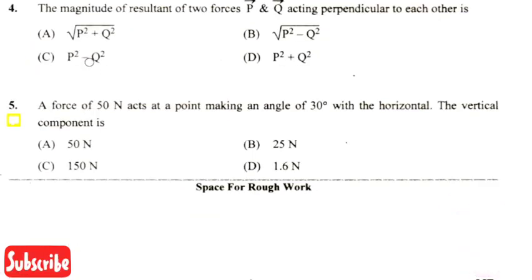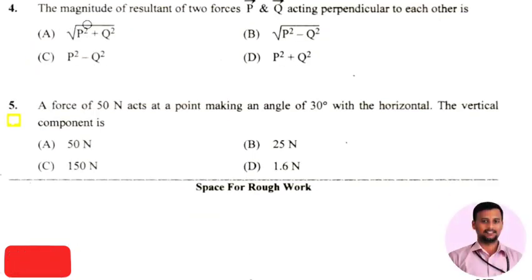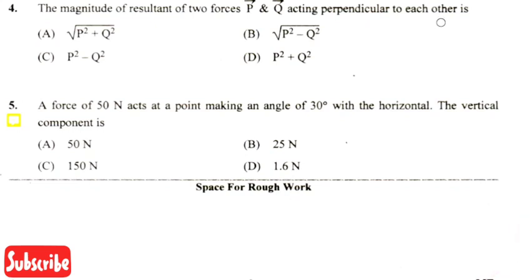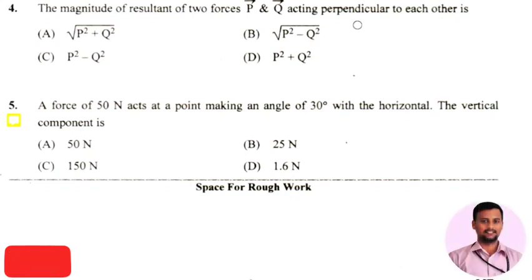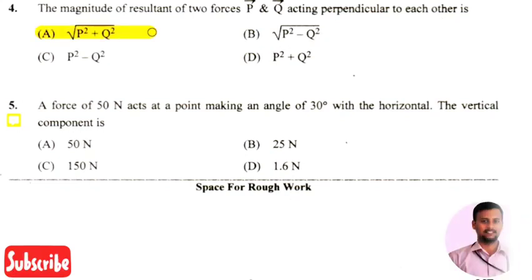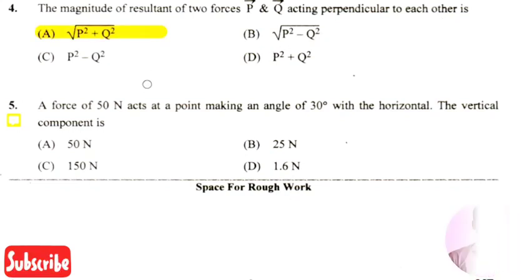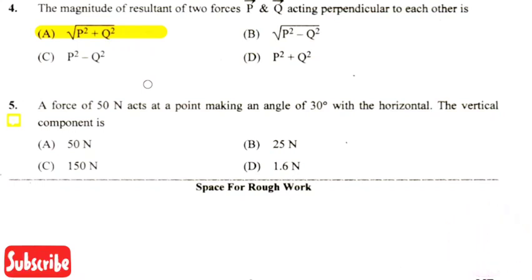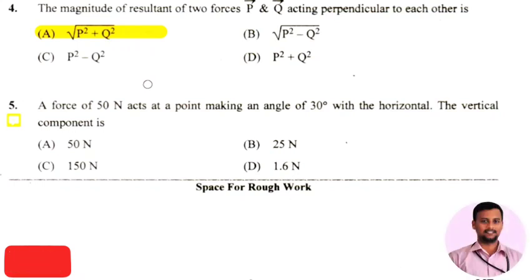The next question asks about the magnitude of the resultant of two forces P and Q acting perpendicular to each other. The right answer is option 1: the resultant force will be the square root of P² plus Q².